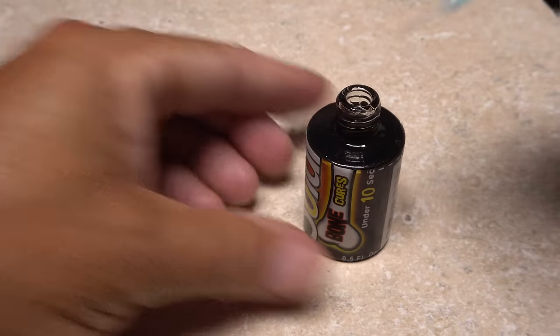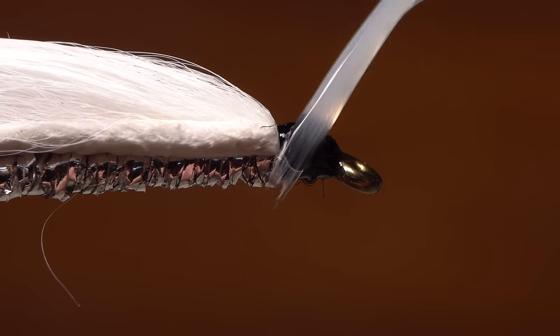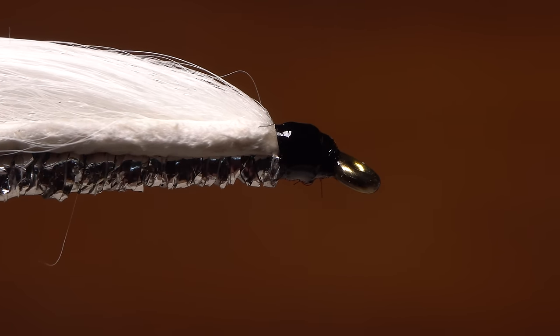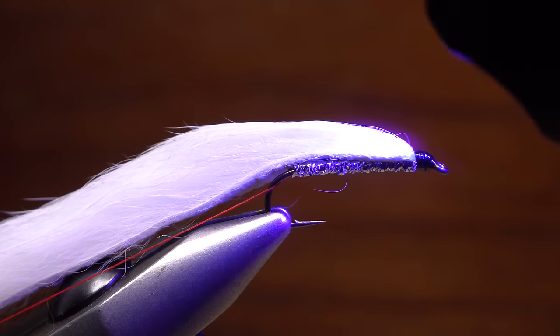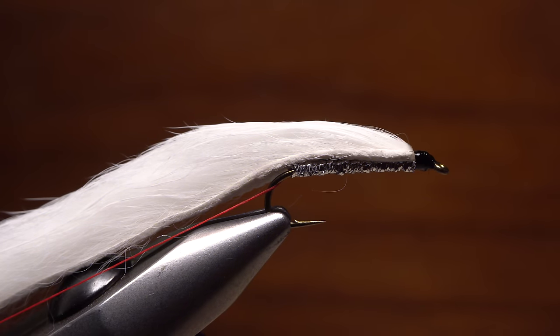Although you could save this step for later, I like to apply an ample coat of UV cure resin to the head of the fly at this part of the tying sequence, when all the white fur is pulled back and out of the way. After a shot of UV light, you can rest assured that that rabbit strip won't pull free during the next step of the tying procedure.